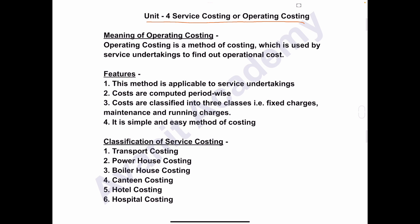These industries convert raw material into finished product, and to find out the cost per unit they adopt the output costing method or process costing method. So all these industries which are engaged in production of goods adopt output costing method or process costing method to find out cost per unit.